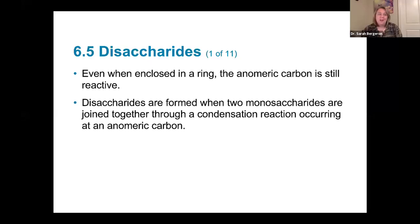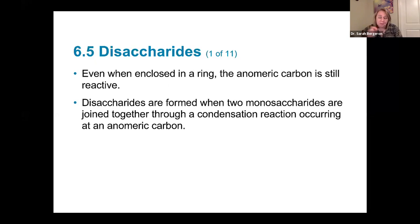We are on Chapter 6, Section 5, and we're going to talk about disaccharides. Di meaning two, so two sugars. When we draw our sugars, we've been drawing them in rings, and you're able to find the anomeric carbon — that's the carbon attached to two oxygens. Even though it's attached to two oxygens, it's still reactive. And because it's reactive, we can link one ring to another ring, and that's how we form disaccharides.